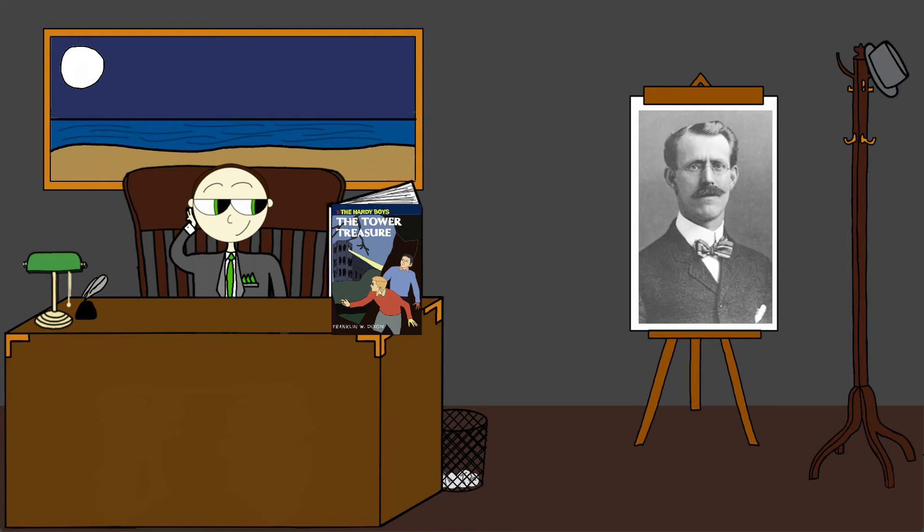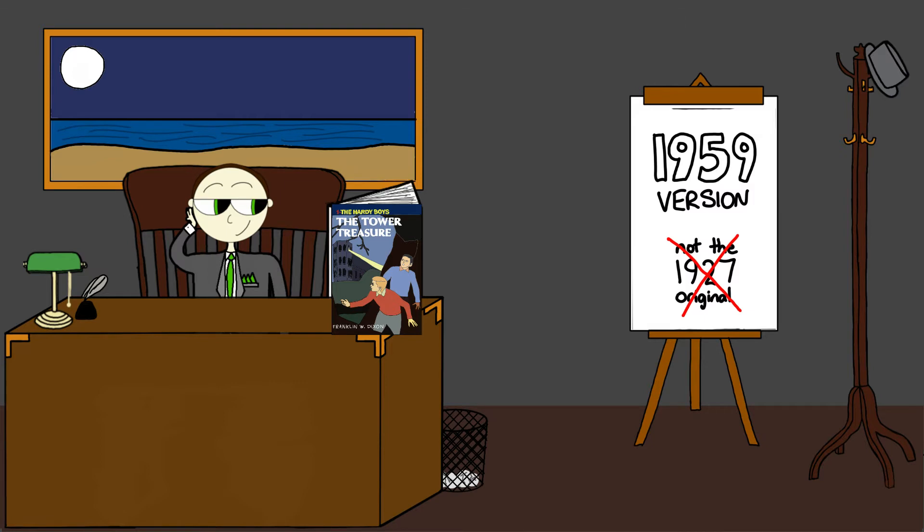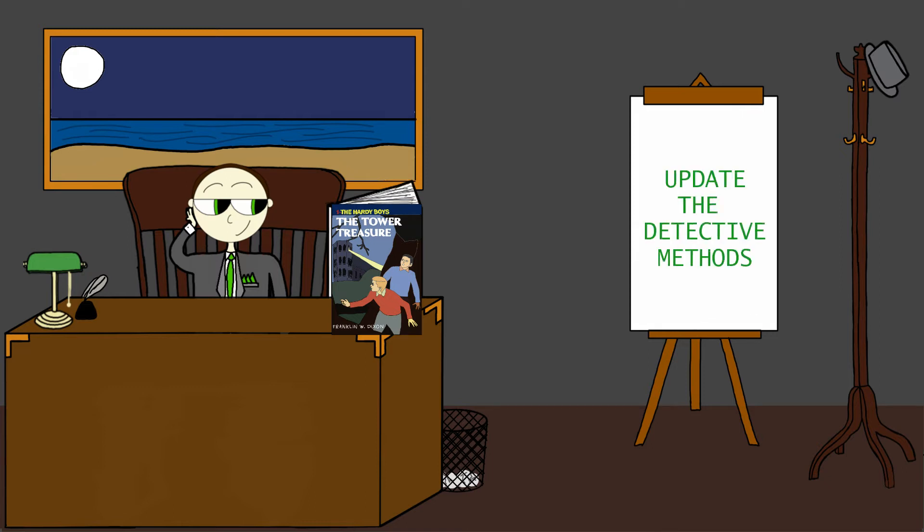It was written by the Stratemeyer Syndicate and was published by Grosset & Dunlap. The version I'm looking at today is the 1959 rewrite of the book, also titled The Tower Treasure, but with a slightly different plot, mostly involving updated detective methods. There was also a shortening of the book and a condensation of how quickly some of the clues were figured out and put together. In the future, depending on if I can find the original editions of the early Hardy Boys novels, we can potentially look at them as well.